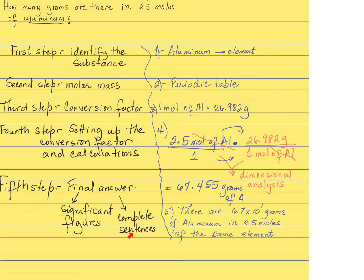You need to write your answer using the correct number of significant figures. You have 2 significant figures in 2.5 and 5 in the other value, so you write the final answer using only 2. Since 67.0 has 3 significant figures, you have to write that in scientific notation if you want to express the answer using only 2 significant figures. Move the decimal point to the left one place, adding 1 to the power of 10. Not all the time do you have to use scientific notation, but for this specific case you must use it to have only 2 significant figures.